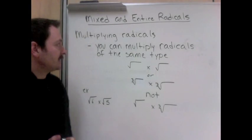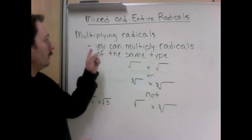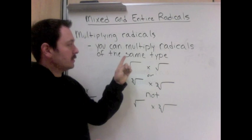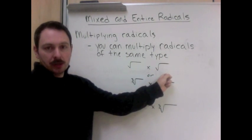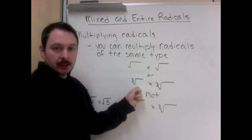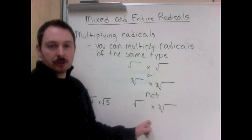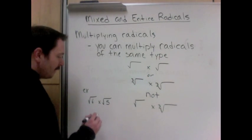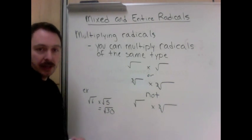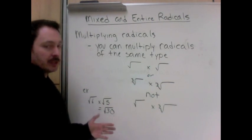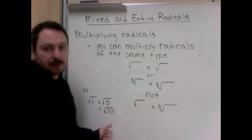Before I explain how to simplify radicals, we need to know a little bit about how radicals work. First of all, when multiplying radicals, you can multiply radicals of the same type. What that means is you can multiply square roots times square roots, you can multiply cube roots times cube roots, but you may not multiply square roots by cube roots. An example here would be the square root of 6 times the square root of 5 equals the square root of 30. So anytime you have roots that are the same type, you can multiply the numbers inside and you can simplify them.